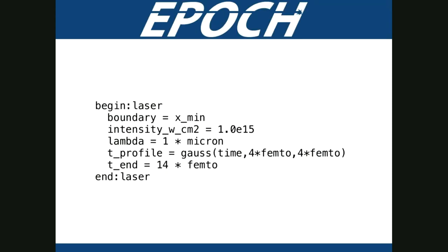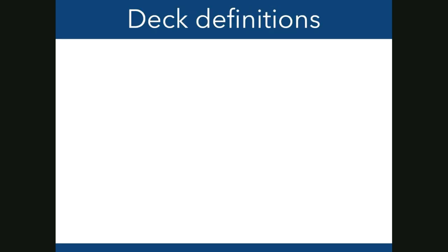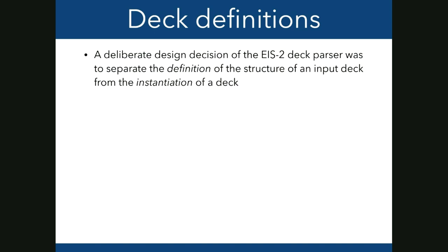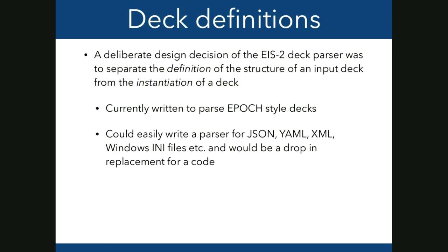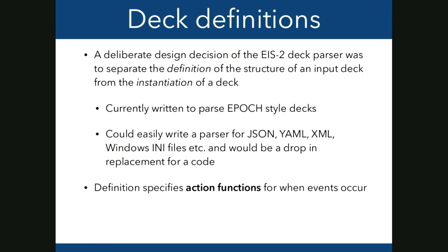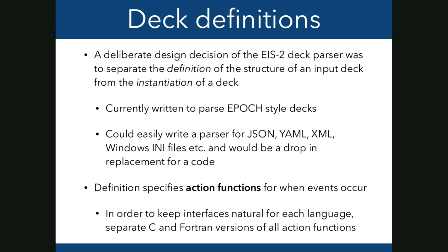A deliberate design decision in EIS-2 is to separate the definition of a deck's structure from an instantiation of a deck. Currently it parses EPOC-style input decks, but you could equally write something to read JSON, YAML, XML, or Windows INI files — it would be a drop-in replacement. The definition specifies action functions for when events occur. Unlike the maths parser, there are separate natural interfaces for C and Fortran — equivalent and interchangeable.